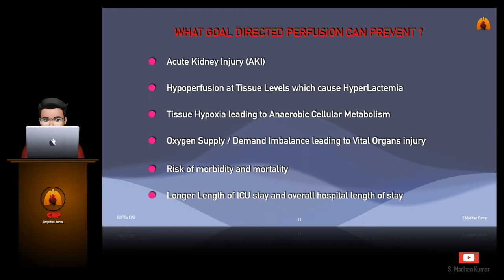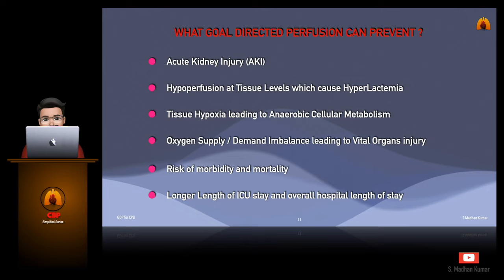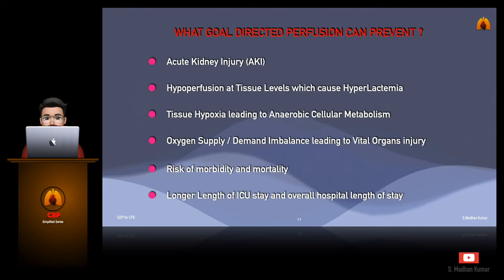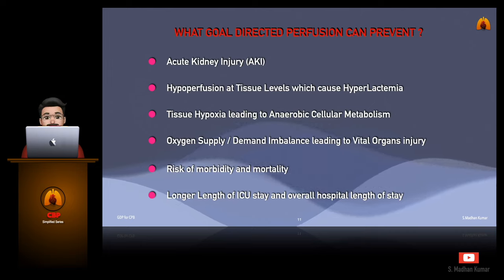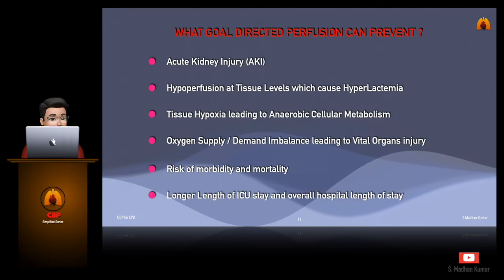Goal-directed perfusion can prevent acute kidney injury, hyperperfusion at tissue levels which can cause hyperlactemia, tissue hypoxia leading to anaerobic cellular metabolism, oxygen supply-demand imbalance leading to vital organ injury, risk of morbidity and mortality, and longer length of ICU stay and overall hospital length of stay.